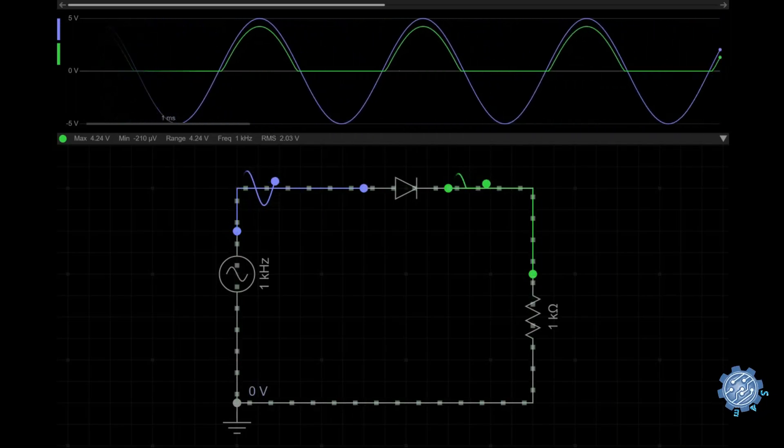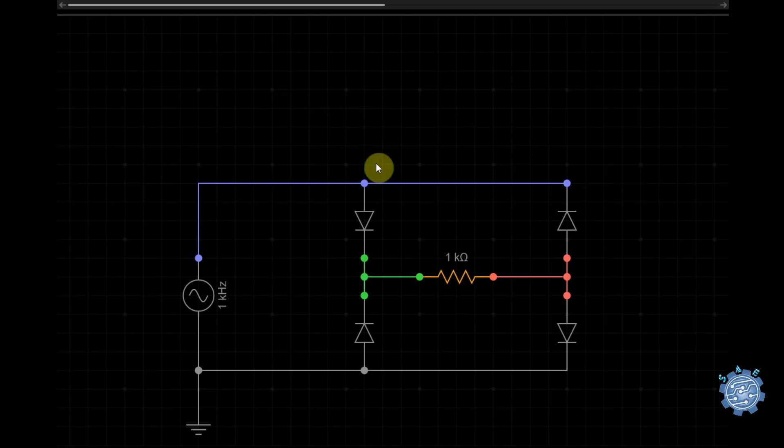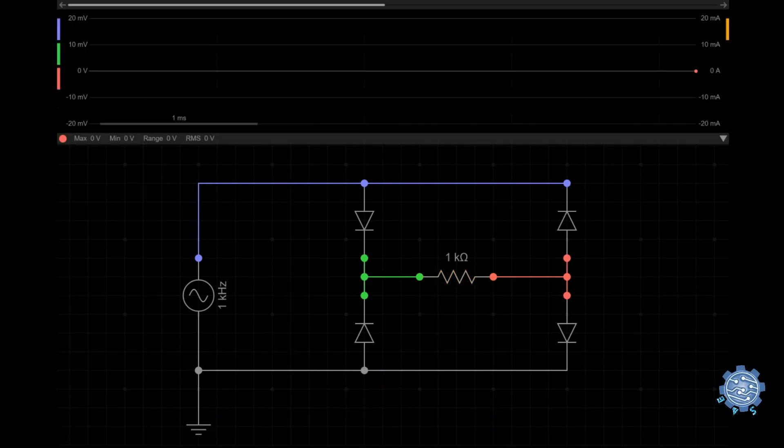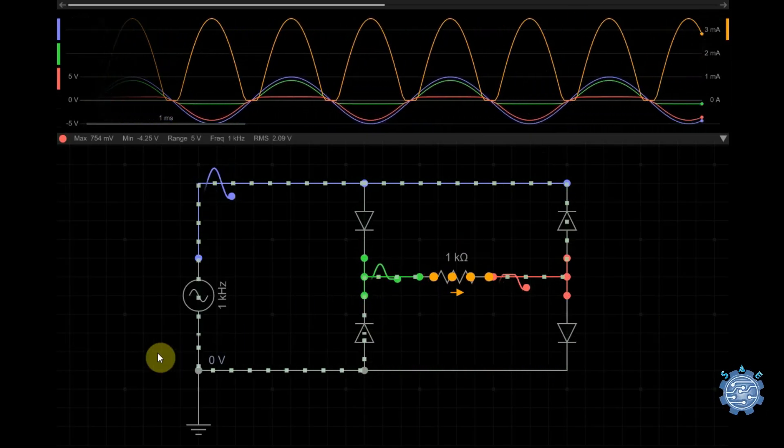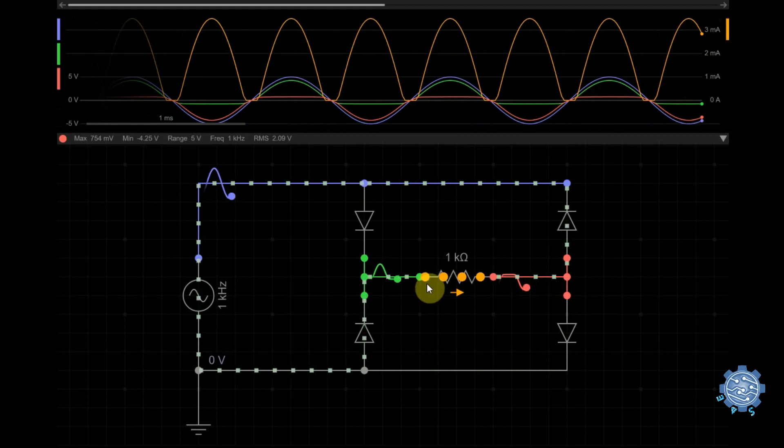In general, the small signal diode is not used for rectifiers because usually the signal to be rectified is having a higher amplitude and it will not be a small signal anymore.